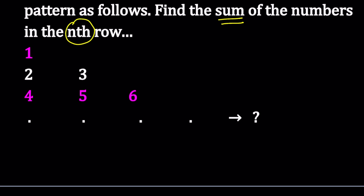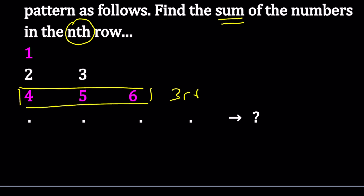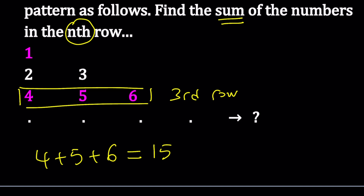To understand how this problem works, let's take a look at some particular rows — maybe the third one — and try to understand the pattern. Because if you can't solve a problem directly, you need to look at a simpler version of that problem. So I'm going to focus on 4, 5, and 6, which is the third row. The sum of these three numbers is 4 plus 5 plus 6, which is 15.